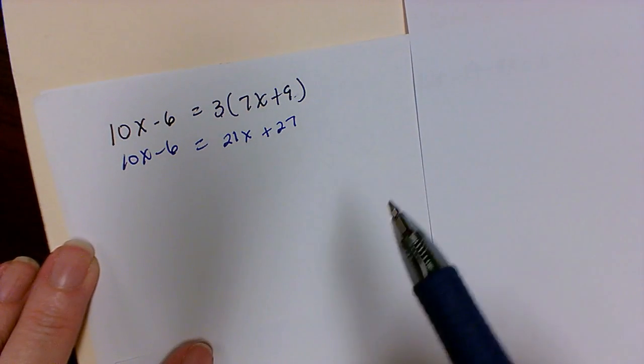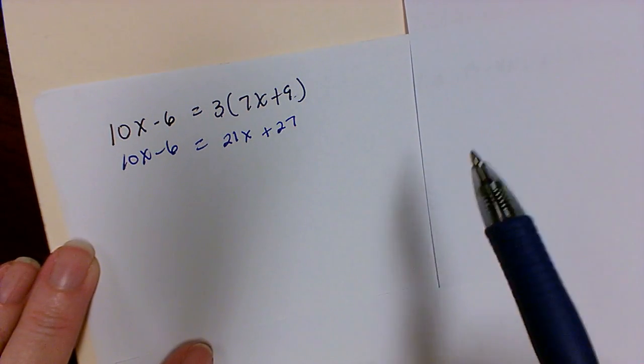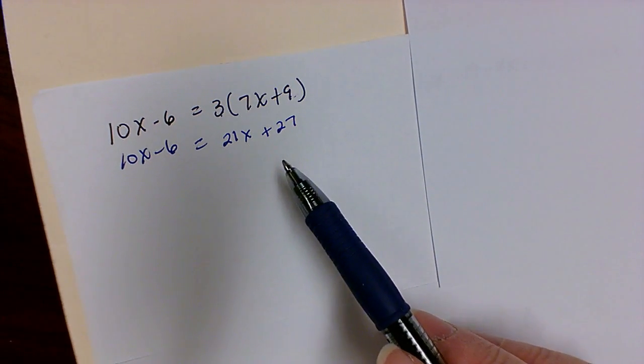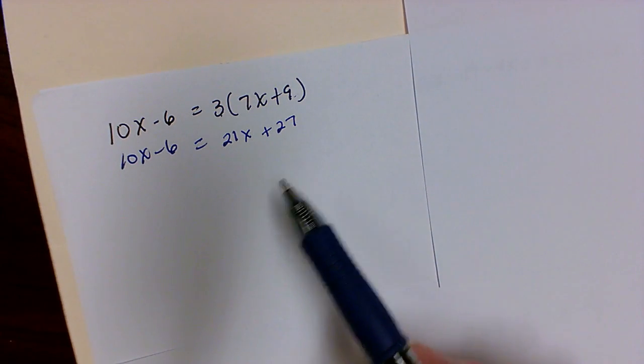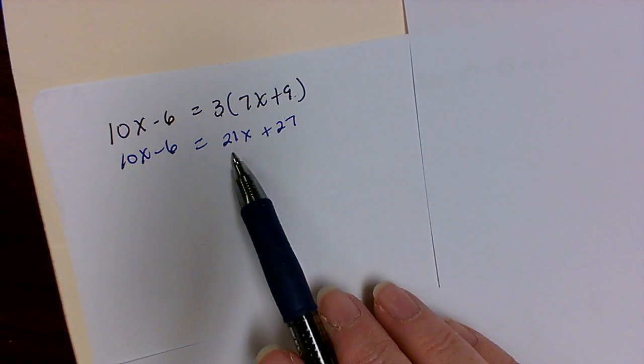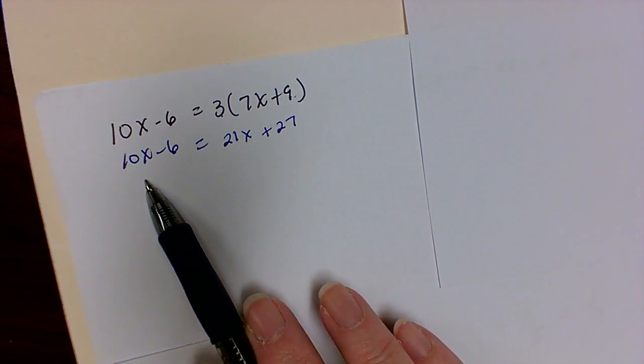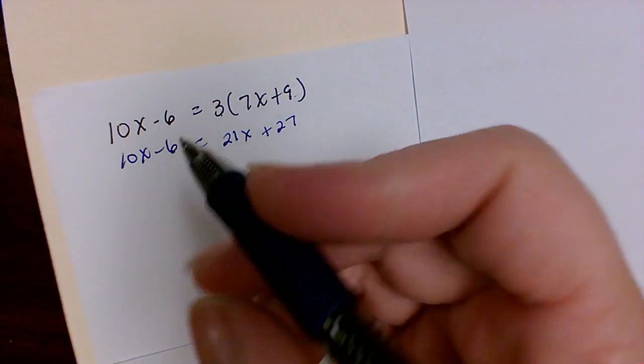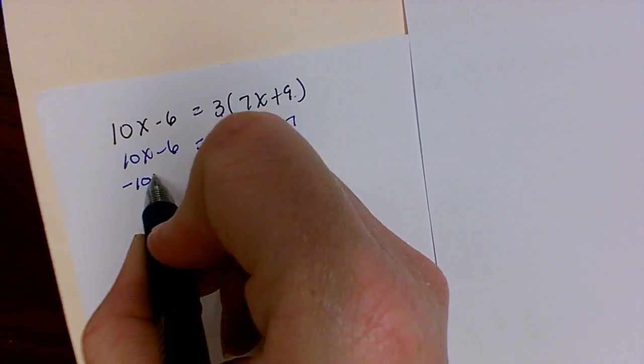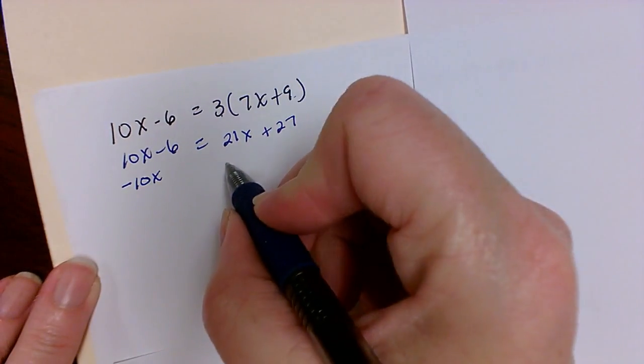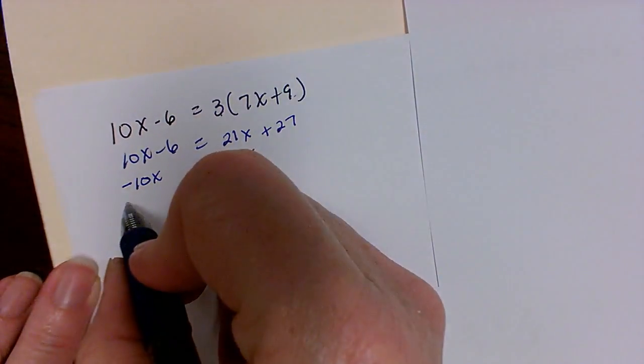Now we can look at our equation and decide which way we want to go. Remember, we want to get x terms or variable terms on one side and numerical terms on the other. I like to keep my x as positive, so I'm going to move the 10x over here, and I'm going to do that by doing opposite of what's being done. The 10x is being added, so I'm going to subtract it.